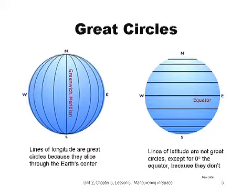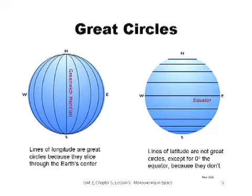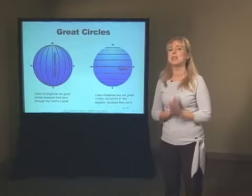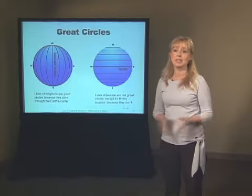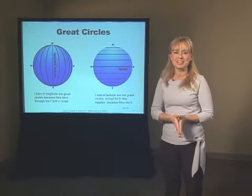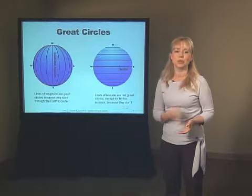Think about the orange we discussed before. Lines of latitude could be created by slicing the orange from top to bottom, perpendicular to the normal sections as shown on the right. Here you can see the equator, which is one unique latitude. What makes the equator a unique line of latitude? The equator is the only line of latitude that includes the center of the Earth, so it's the only line of latitude that is a great circle. Any orbit around Earth must be a great circle because the spacecraft is in orbit around Earth's center. Thus, the orbit plane passes through Earth's center.